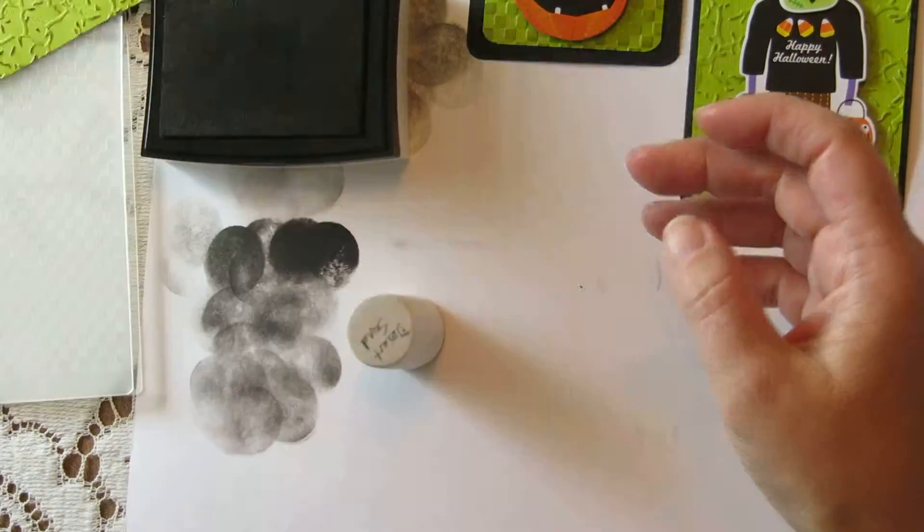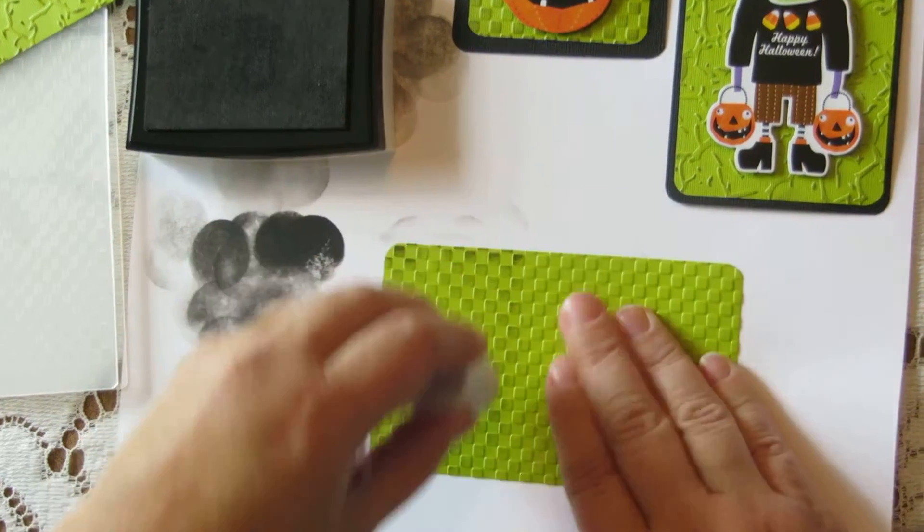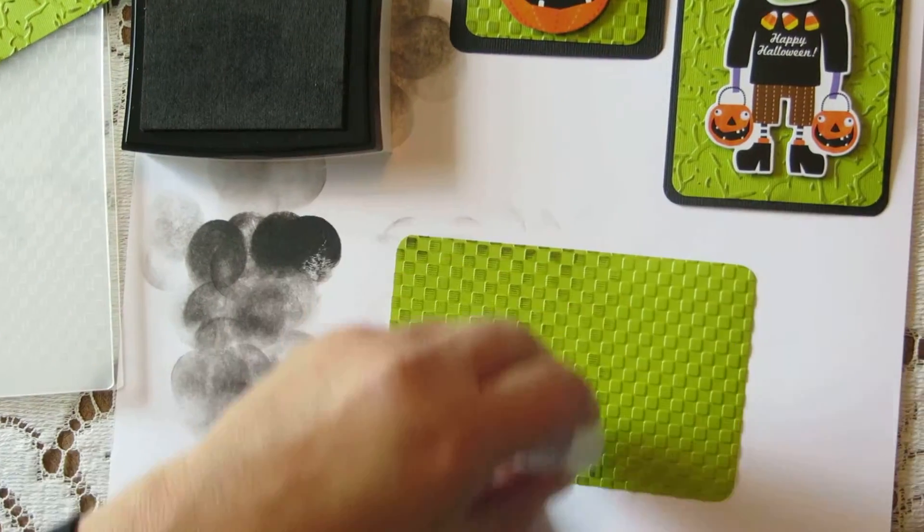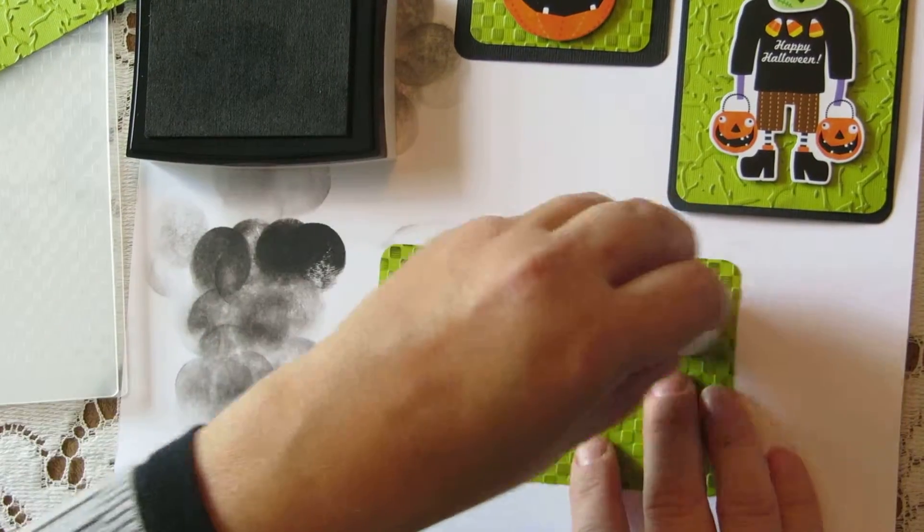You can do the same thing with the checkerboard pattern. I'm not going to re-ink the marshmallow. It still has plenty of ink on it, especially with slow drying inks like the VersaFine. You have plenty of time to work with it.